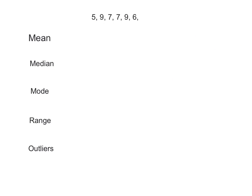So let's look at this one. We have 5, 9, 7, 7, 9, and 6. To find the mean, the first thing we have to do is add up all the numbers: 5 plus 9 plus 7 plus 7 plus 9 plus 6. When we add these numbers up: 9 plus 5 is 14, plus 7 is 21, plus 7 is 28, plus 9 is 37, plus 6 is 43. Double-checking: 5 plus 9 plus 7 plus 7 plus 9 plus 6 gives us 43 total.